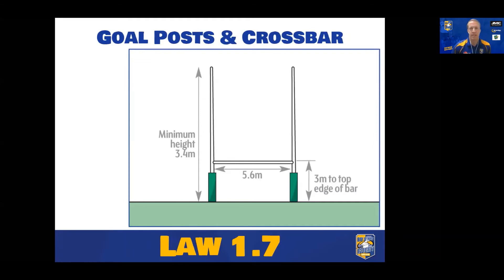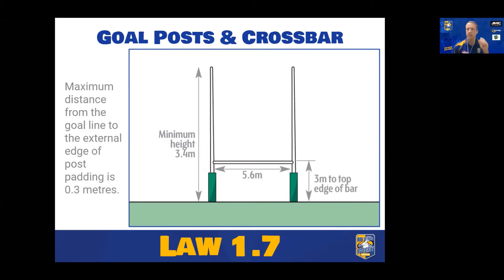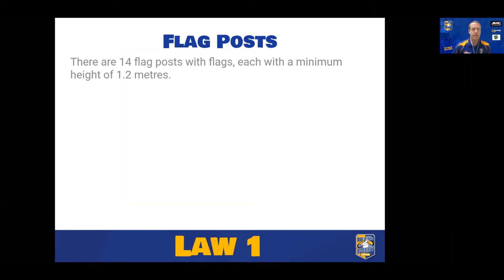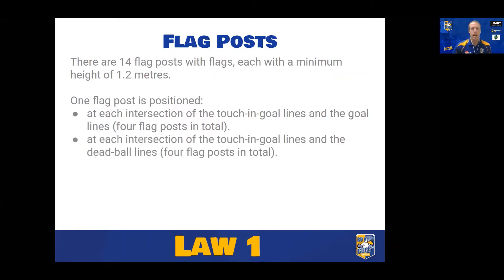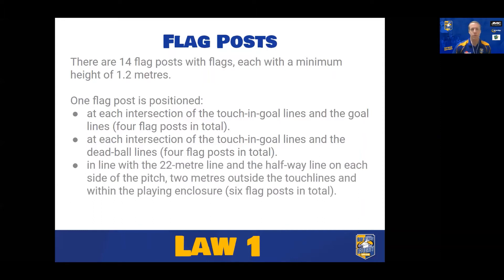Goalposts need to be 5.6 metres between the uprights and 3 metres to the top edge of the crossbar. The height of the actual goalposts themselves need only be a minimum of 3.4 metres. The distance from the external edge of the post padding from the goal line is no more than 0.3 metres. There are 14 flagposts on the field, each with a minimum height of 1.2 metres — at the intersections of the touch and goal lines, the goal lines and dead ball lines, and in line with the 22 and halfway. The 22 and halfway flagposts are placed 2 metres outside the touchlines within the playing enclosure.